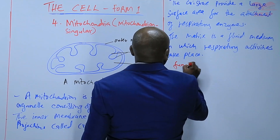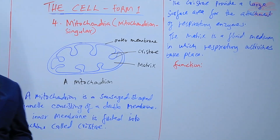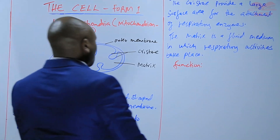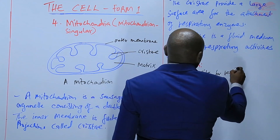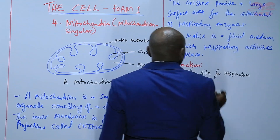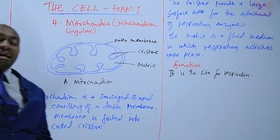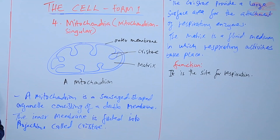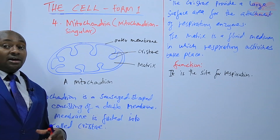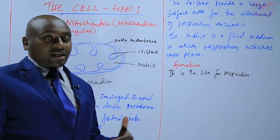Let us look at the function of the mitochondrion. Basically, the mitochondrion is the site for respiration — respiration occurs within the mitochondrion. It is also good to note that some cells have more mitochondria than others. Some cells have numerous mitochondria, and that is because of the work that they do. If a cell is very active, it needs a lot of energy, and that energy comes from the mitochondrion, which is the site for respiration and energy production.